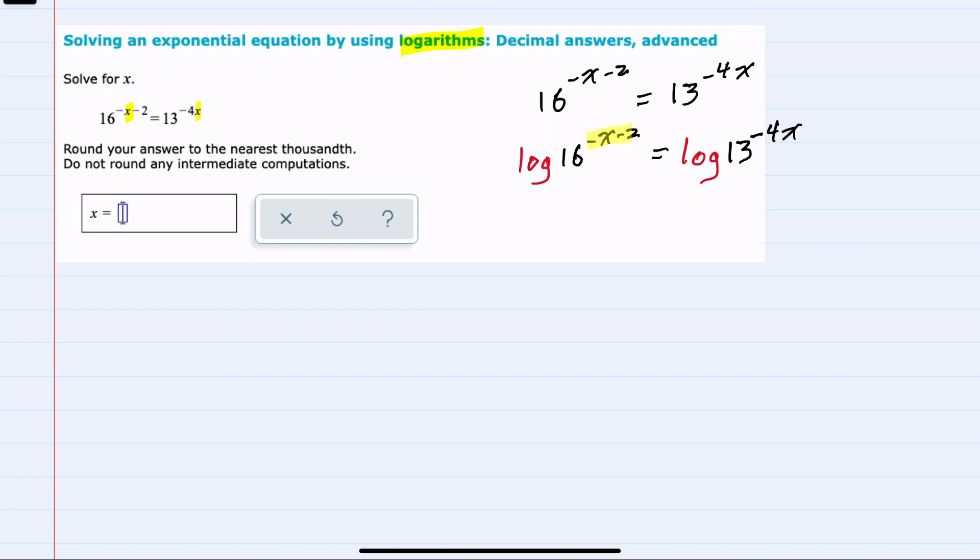we know that these exponents can come down in front as coefficients on both sides. That would give us negative x minus 2 times the log of 16, and negative 4x times the log of 13.